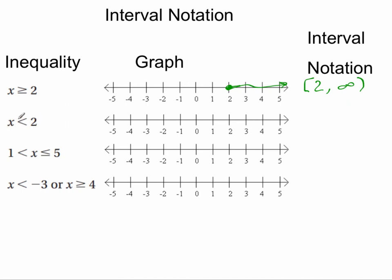If I want to graph x is less than 2, I'm going to use an open circle because I'm not including 2, and then I want all of the x that are less than 2. So what is this representation in interval notation? Well, we're going to start at negative infinity, so I want that open parentheses, negative infinity, and then we're going to go to 2, but we're not going to include 2, so we're going to have another parentheses.